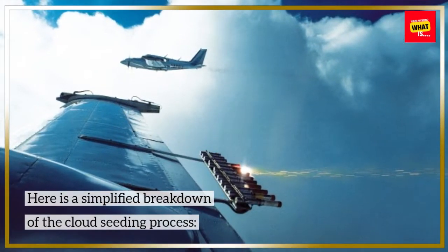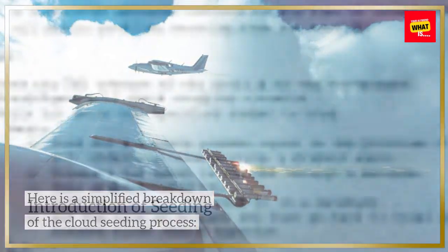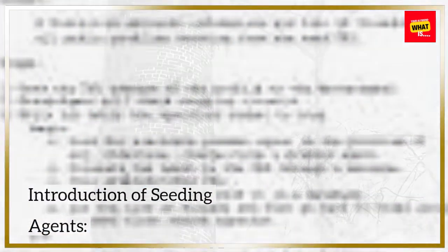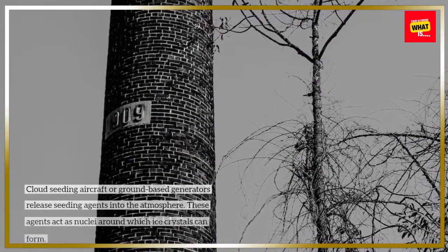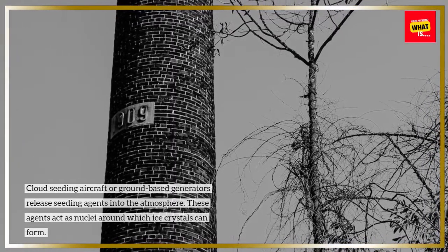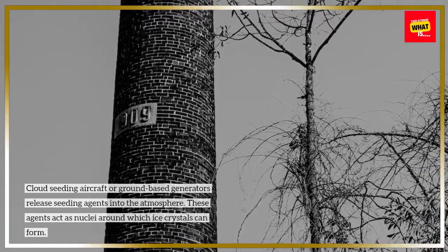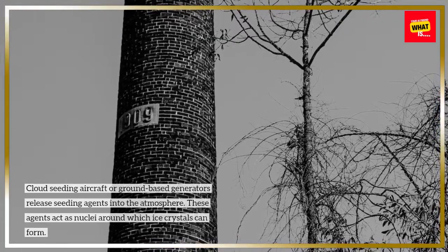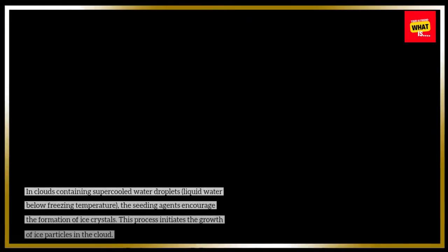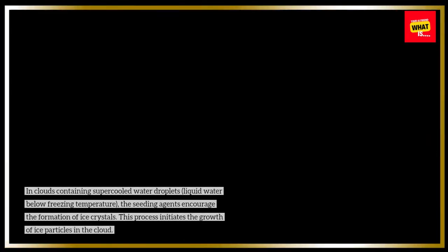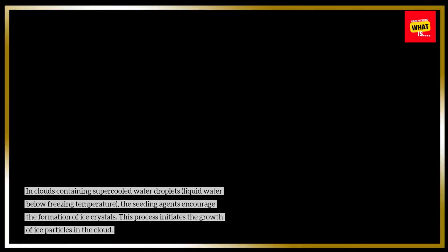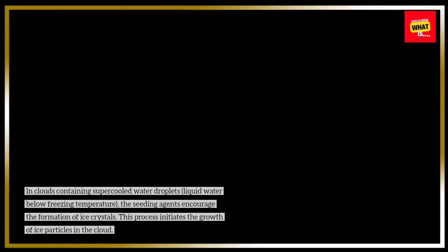Here is a simplified breakdown of the cloud seeding process. First, cloud seeding aircraft or ground-based generators release seeding agents into the atmosphere; these agents act as nuclei around which ice crystals can form. In clouds containing supercooled water droplets — liquid water below freezing temperature — the seeding agents encourage the formation of ice crystals, initiating the growth of ice particles in the cloud.